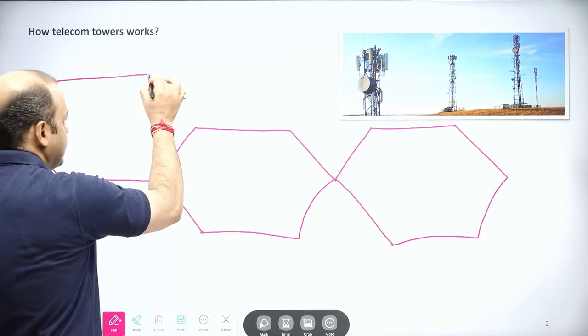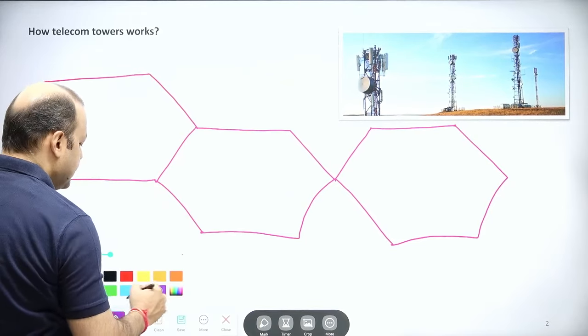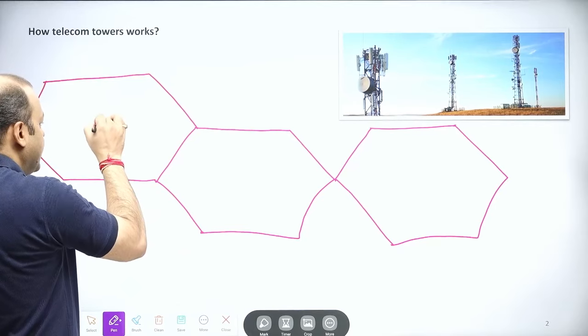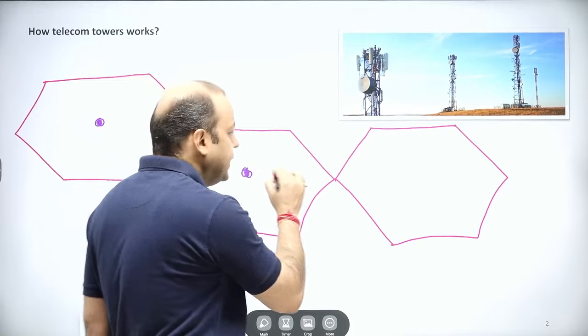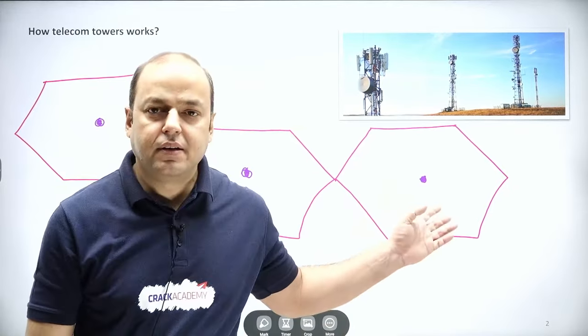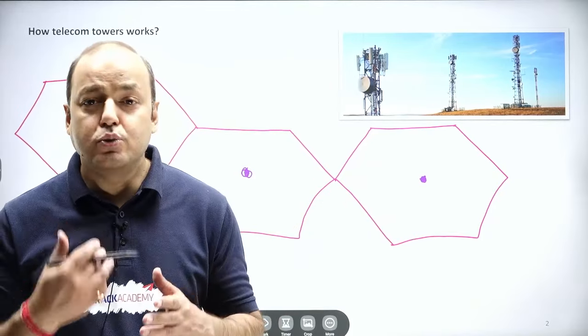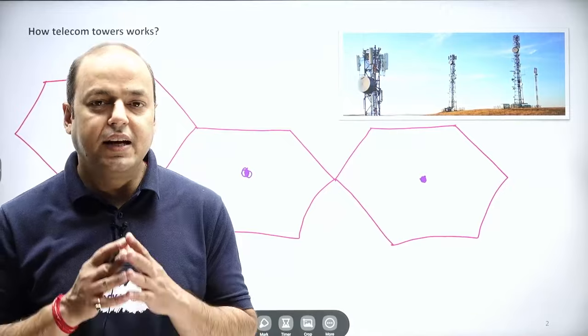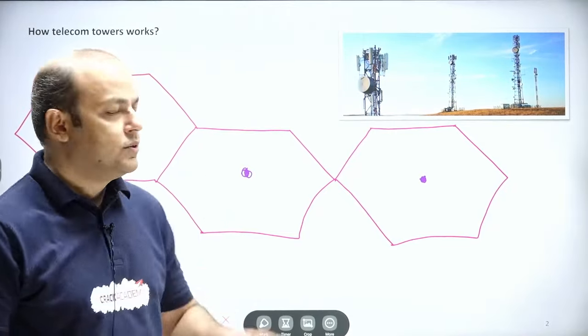Now the point is, at which particular point will the tower be placed? It will be right at the center. So mathematically it has been calculated—if you place the tower right at the center of this geometrical figure, it covers all of the area and the resources are wasted in nominal amount. So this is how the tower that we are using in 4G is being placed.